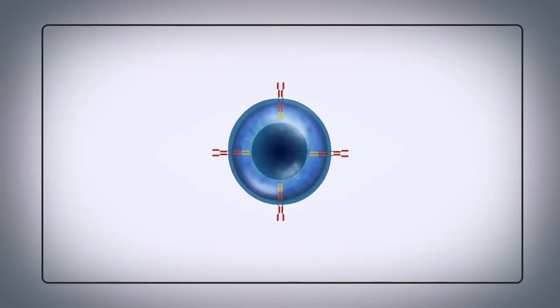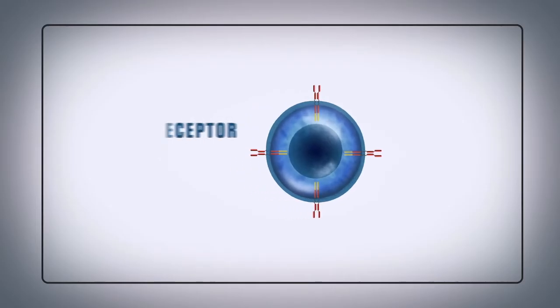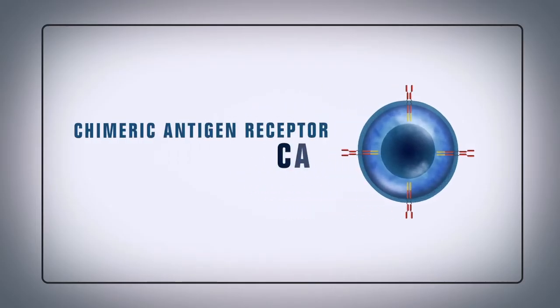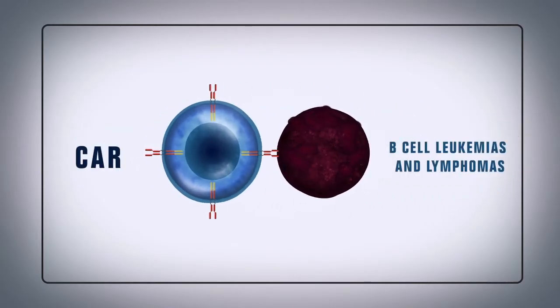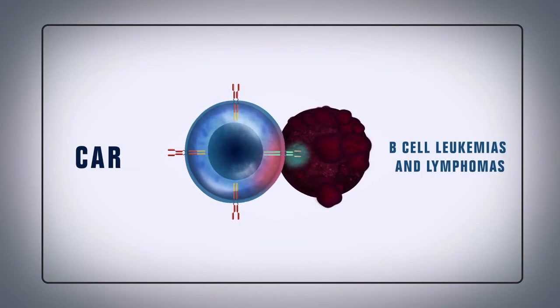The engineered cells contain an antibody-like protein known as chimeric antigen receptor, or CAR. In the case of blood cancers, including B-cell leukemias and lymphomas, the CAR is designed to bind to a specific protein on these cancerous B cells, called CD19.